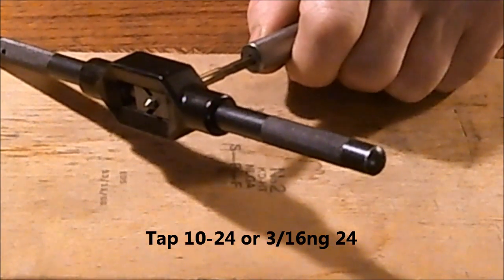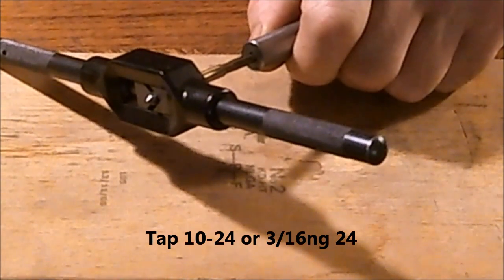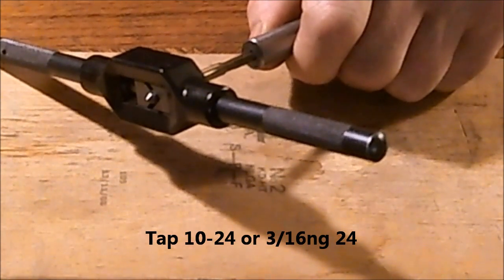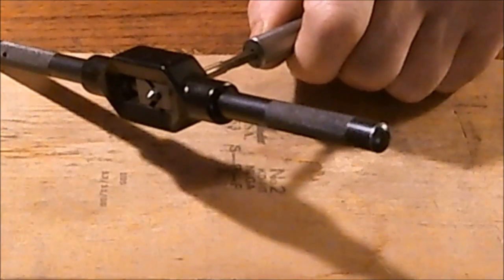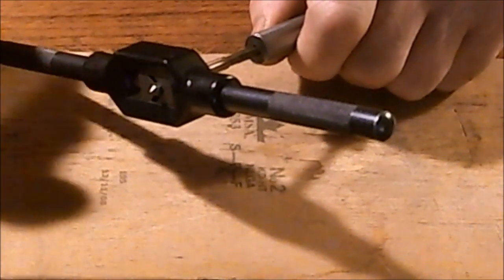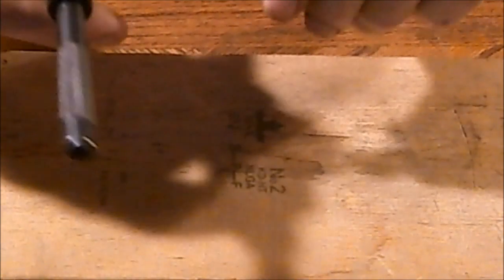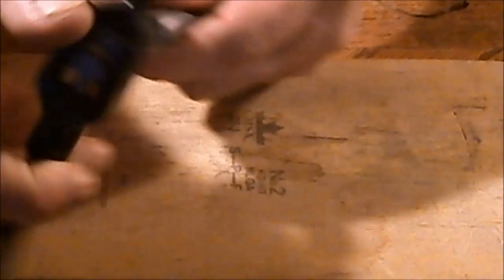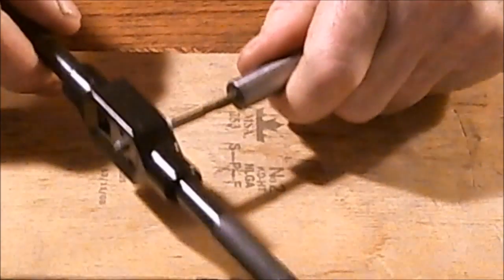Next, you're going to want to tap the hole using either a 10-24 or a 3/16ths NG by 24 tap. And when you tap this thing, go kind of slow, just a couple of threads at a time, use plenty of oil and then back off. Try to go a little deeper, then back off and try to go a little deeper. Otherwise, you'll break the tap.